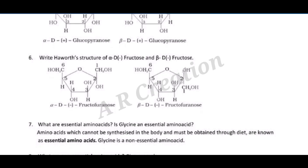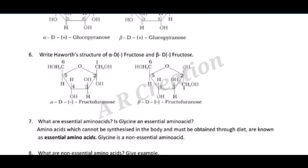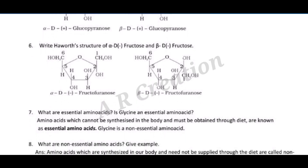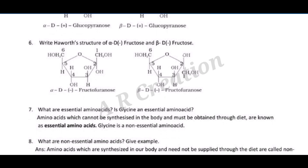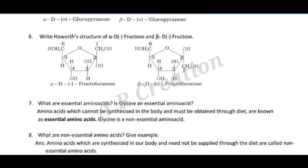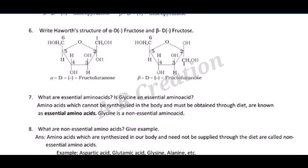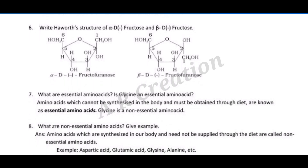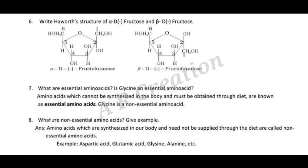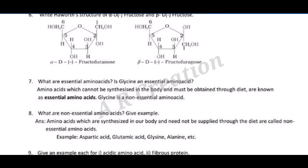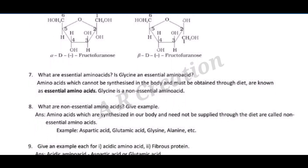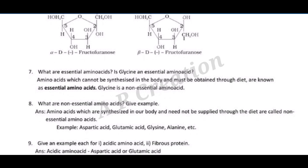Question eight: what are non-essential amino acids? Give an example. Answer: amino acids which are synthesized in our body and need not be supplied through the diet are called non-essential amino acids. Examples: aspartic acid, glutamic acid, glycine, alanine, etc.